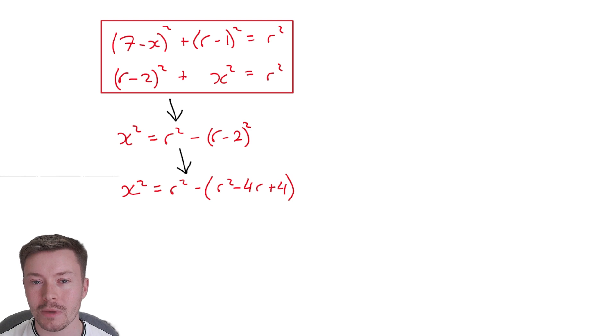I'm then going to collect all the terms, be careful, when you're subtracting the whole bracket, I'm going to subtract r squared, subtract the minus 4r, and subtract 4. So if I do that, I get x squared equals 4r minus 4.